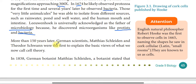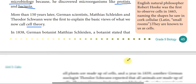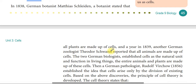More than 150 years later, the German scientists Matthias Schleiden and Theodor Schwann were the first to explain the basic views of what we now call cell theory. In 1838, the German botanist Schleiden stated that all plants are made up of cells. And in 1839, the German zoologist Theodor Schwann reported that all animals are made up of cells.